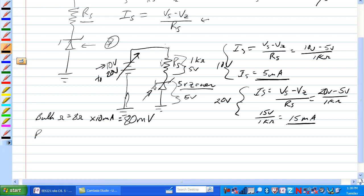So power dissipated by the Zener is equal to voltage of the Zener times current through the Zener. When it was 10 volts, current through the Zener was 5 milliamps. So 5 volts times 5 milliamps is equal to 25 milliwatts.